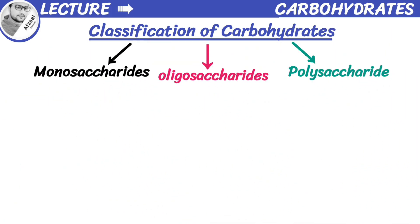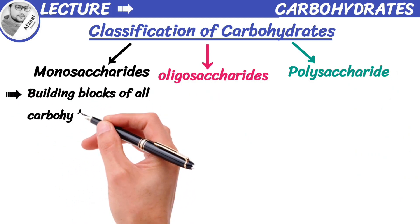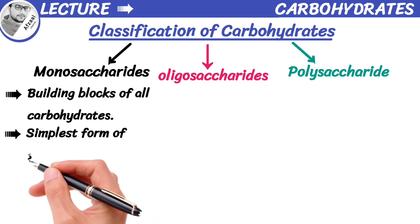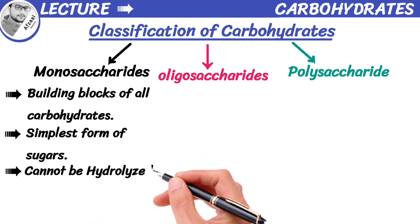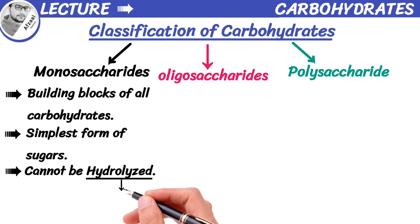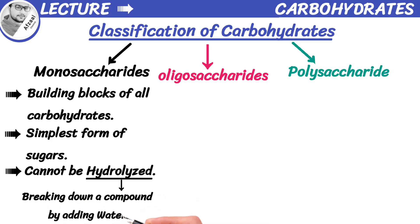Monosaccharides are basically the building blocks of all carbohydrates. They are the simplest form of sugar and cannot be hydrolyzed, because hydrolysis is a chemical reaction that involves breaking down a compound by adding water — but since monosaccharides are already in their simplest form, there is nothing left to break down.